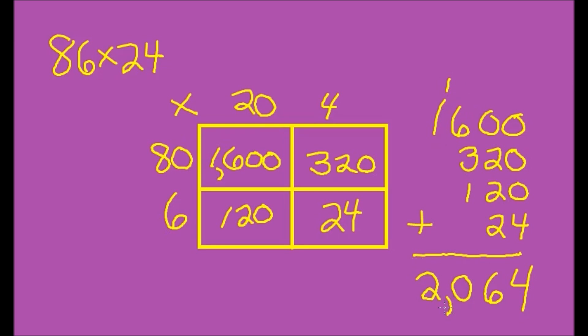So the answer to 86 times 24 is 2064. I hope you enjoyed this video on the box method and try some on your own.